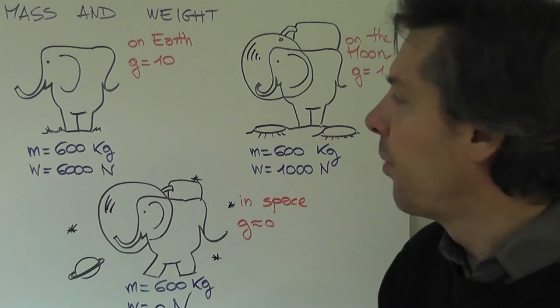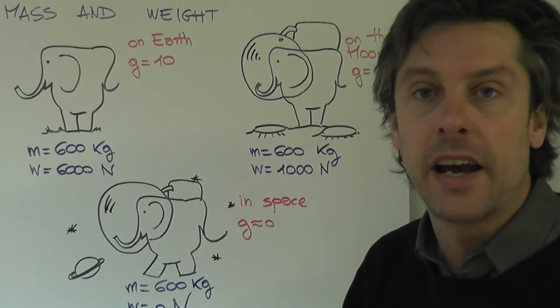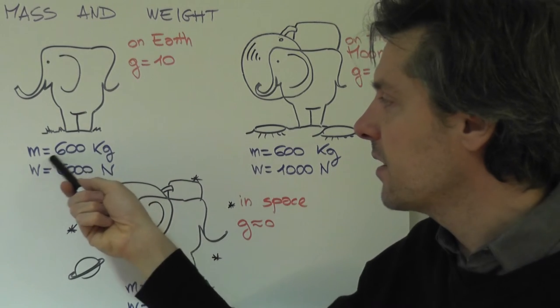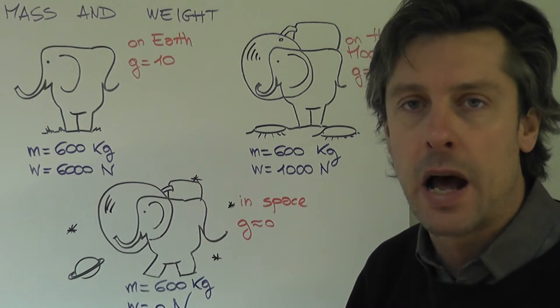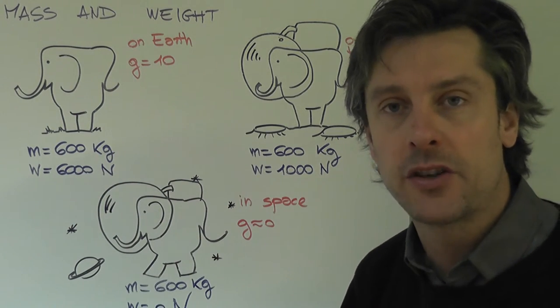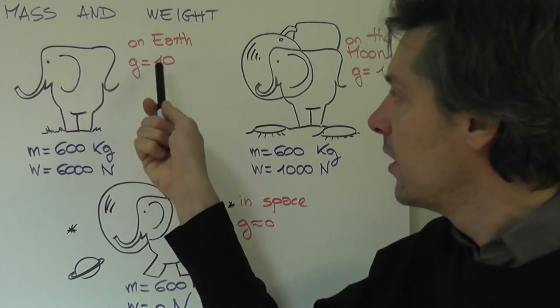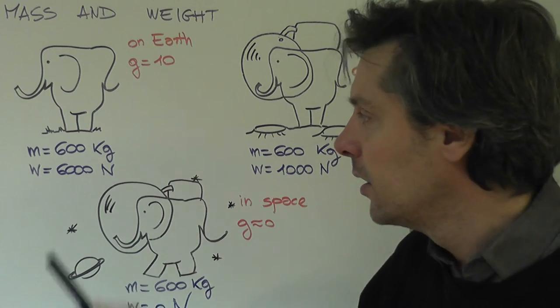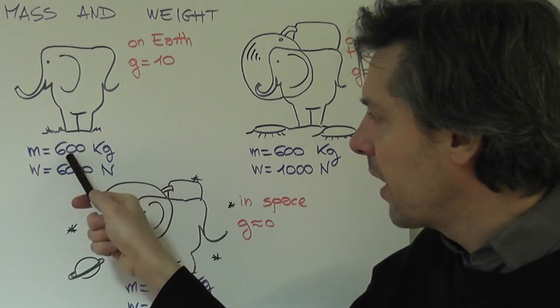So let's see an example. Let's take again our friend Eddie the Elephant. On the Earth, his mass is 600 kilograms. Now since the gravitational force field on the Earth, g is equal to 10 meters per second squared, if you multiply this by this, you will get that the weight of Eddie is 6000 Newtons.